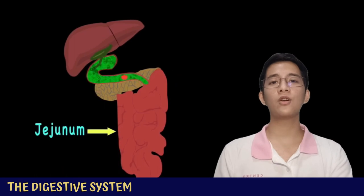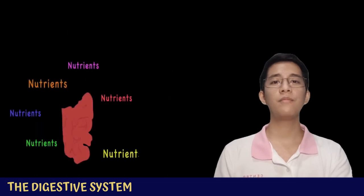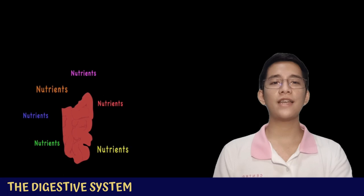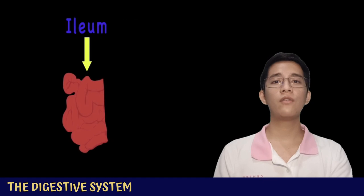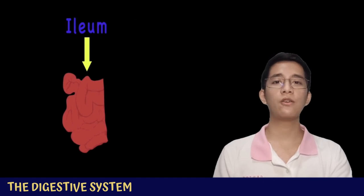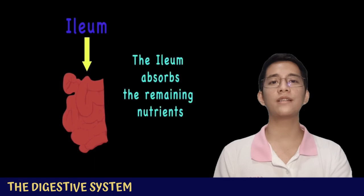The next part of the small intestine is the jejunum, which primarily absorbs sugars, amino acids, and fatty acids. The last part is the ileum, where food spends the most time because most water and nutrients are absorbed there.